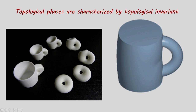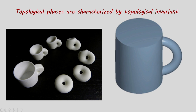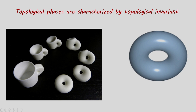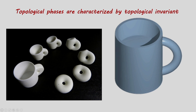The picture shows snapshots of various phases: starting with a white cup on the left, it slowly gets deformed and forms a donut, as seen on the right.